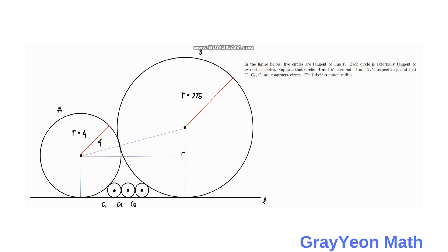Notice that in this figure, I have already drawn two perpendicular lines against line L, which are the radii of circle A and circle B respectively. For circle A, the perpendicular line to L is the radius, which is 4, and for circle B, it is 225. We need to find the horizontal distance between the two circles, and let us call that X.